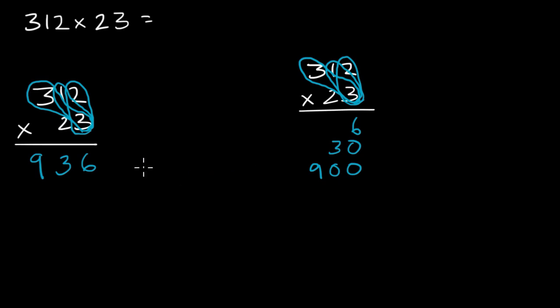So notice, here I just added up the 930 and 6 altogether to get 936 when I'm doing it the standard way. And with the partial products, I've just kept them separate. 3 times 2, 3 times 10, 3 times 300.